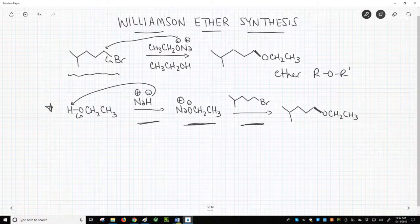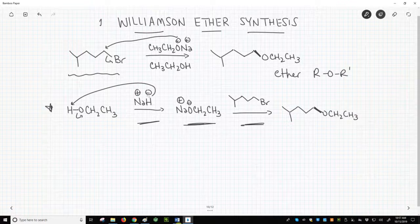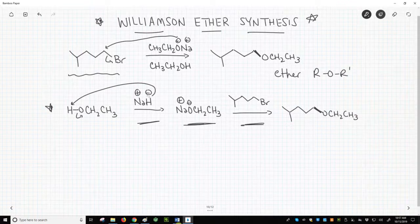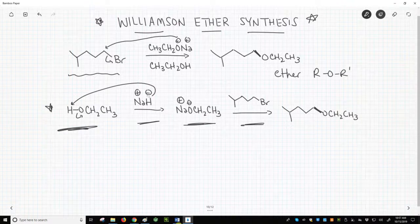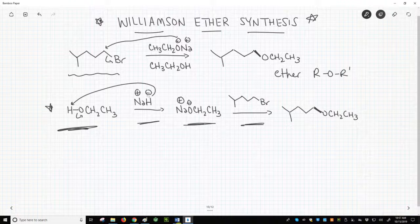Reactions that form an ether through an SN2 reaction are called a Williamson ether synthesis. That is the title of this slide. Williamson ether syntheses are very often depicted in two steps, like the lower second reaction. The first step is a deprotonation to form the alkoxide, and the second step is addition of the alkyl halide for the SN2 reaction.